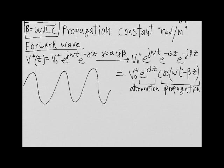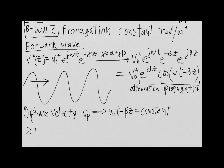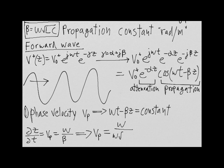It is helpful to visualize this wave traveling in space and traveling in time. There are two fundamental quantities that describe traveling waves. The first of these quantities is phase velocity. To derive phase velocity, let's imagine staying at a single point on the wave as the wave is moving in space and time. This implies that omega t minus beta z is constant. If we take the derivative of the space variable z with respect to time, which is exactly the definition of phase velocity, we get omega divided by beta. Therefore, phase velocity Vp is equal to omega divided by omega times the square root of LC, which equals 1 divided by the square root of LC.